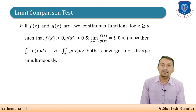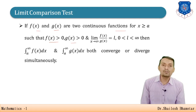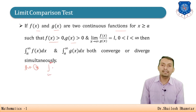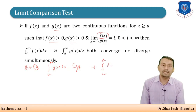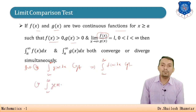For the limit comparison test: if f(x) and g(x) are continuous and positive for x ≥ a, and the limit as x→∞ of f(x)/g(x) equals L where 0 < L < ∞, then both improper integrals are simultaneously convergent or divergent. If the improper integral of f(x) is convergent and g(x) is divergent, we can draw conclusions about the other.